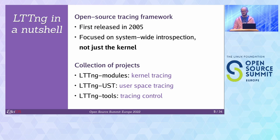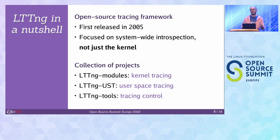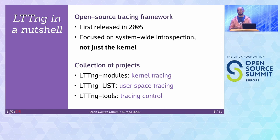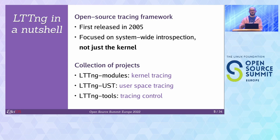There are a ton of kernel tracers out there — perf, ftrace, eBPF. For LTTNG, the goal is to understand the interaction between components on the whole system — not just the kernel itself, but between applications, between applications and the kernel, and between containers. We have LTTNG modules that reuse upstream kernel facilities like tracepoints, syscall tracing hooks, uprobes and kprobes. But we have our own modules for our own ring buffer implementation, filtering facilities, and to produce traces in the Common Trace Format.